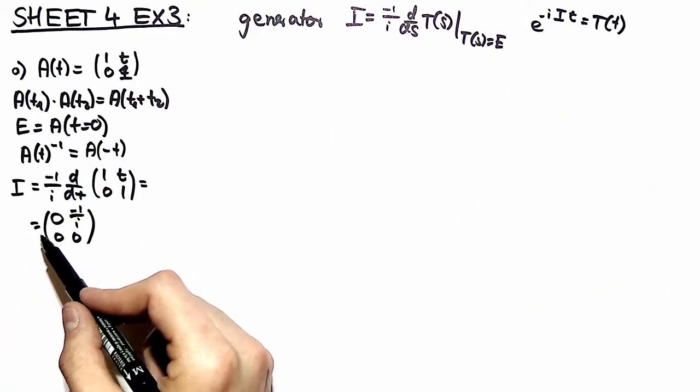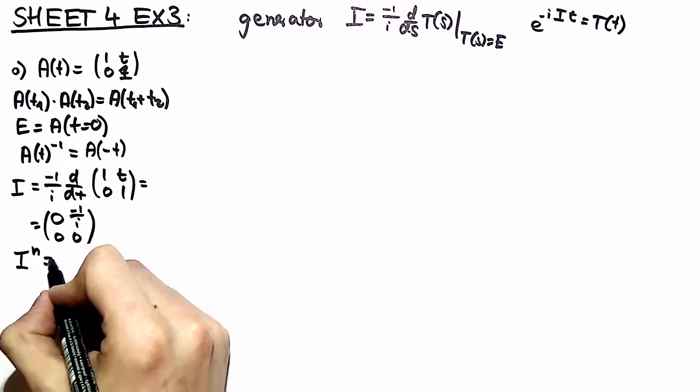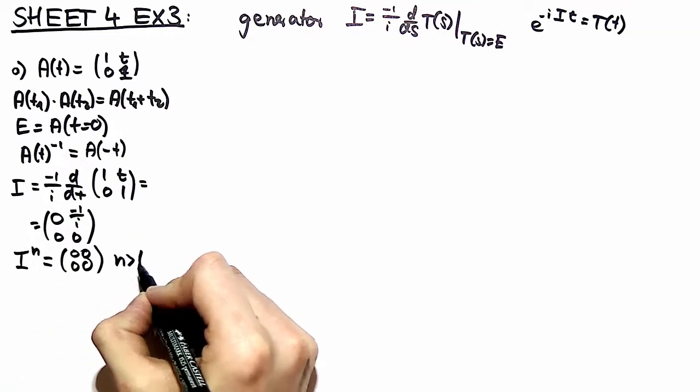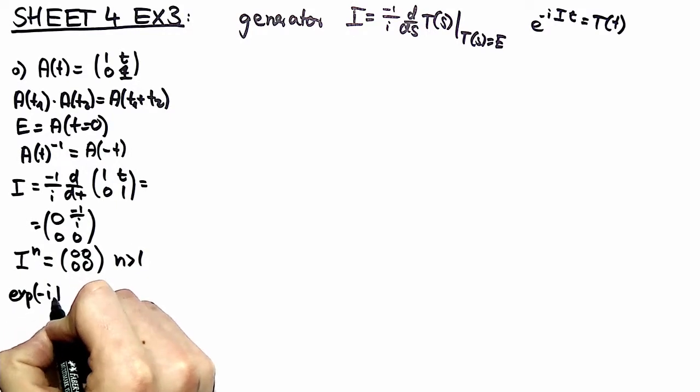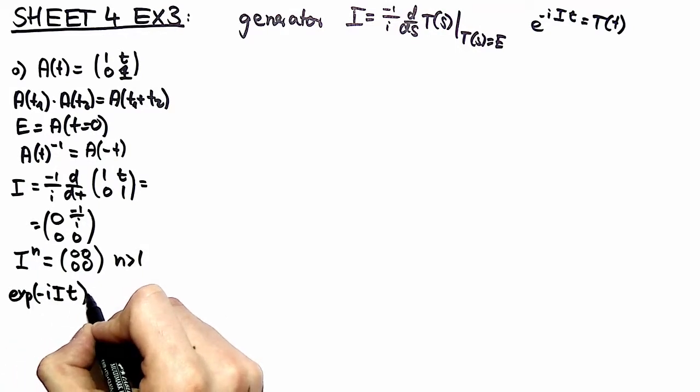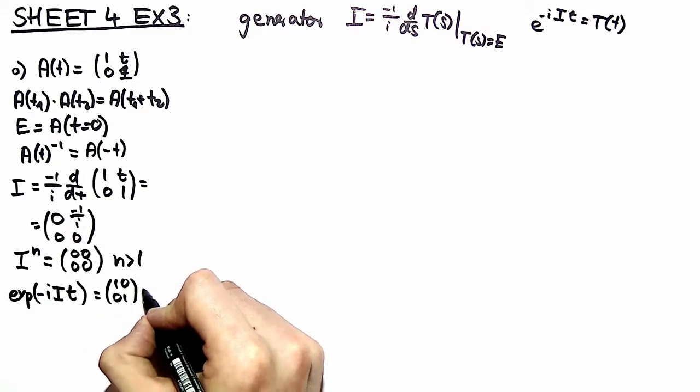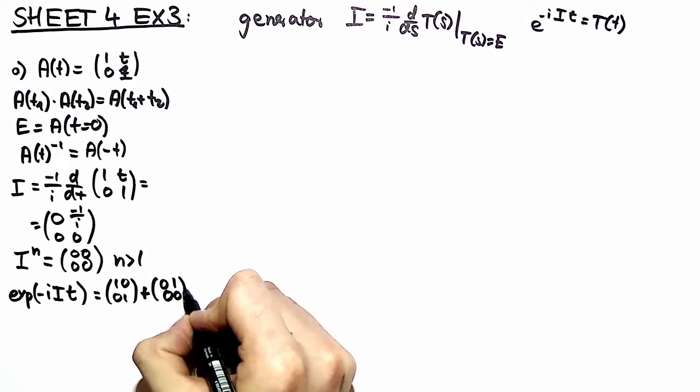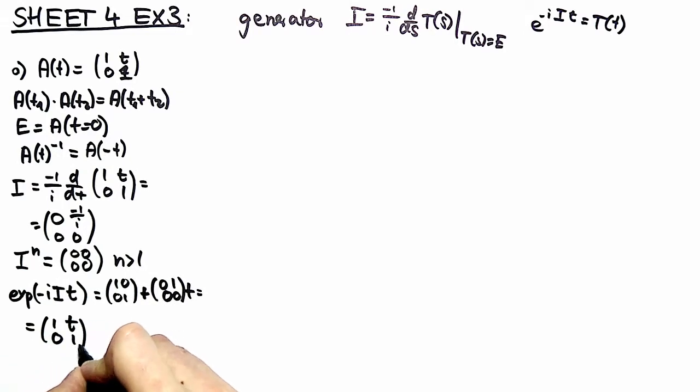When taking the exponential, we have to Taylor expand it and compute powers of i. The most important observation is that this matrix is nilpotent and we get a 0 matrix for all powers greater than 1. So it's very easy to compute the exponential of minus i times the generator times parameter t. This is nothing else than the identity matrix plus our generator times the parameter t, which is what you expect: t in the upper right corner and 1s on the diagonal, A(t).